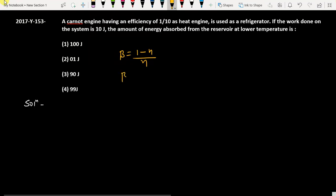Beta is 1 minus 0.1 by 0.1, so that is 0.9 by 0.1, which equals 9. That means the coefficient of performance we got is 9.